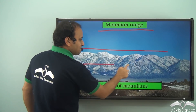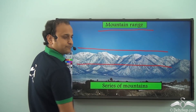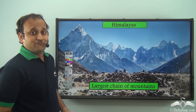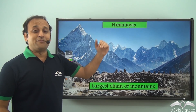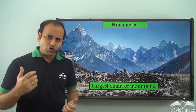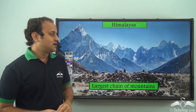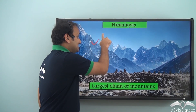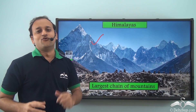When you have a series of mountains like this, they are called a mountain range. Do you know which is the most famous mountain chain in the world? It's the Himalayas, which covers not only India but Bhutan, China and many other countries. Such big is the Himalayan range — it is the largest chain of mountains in the world.